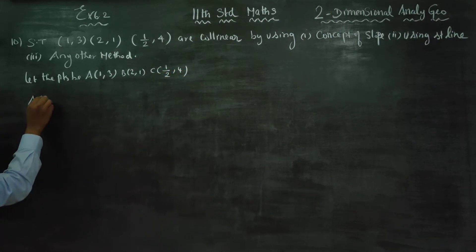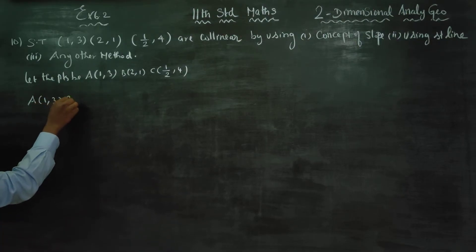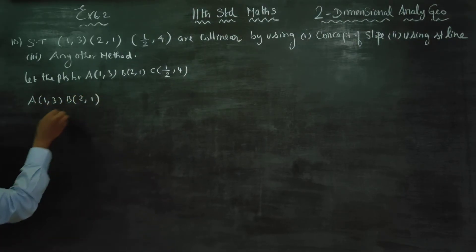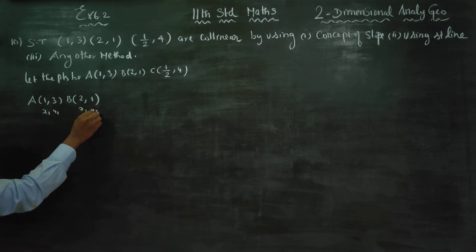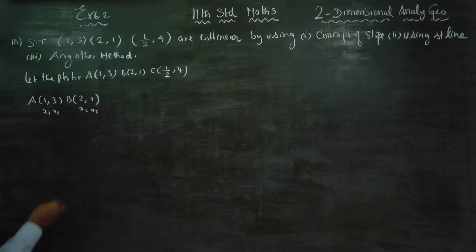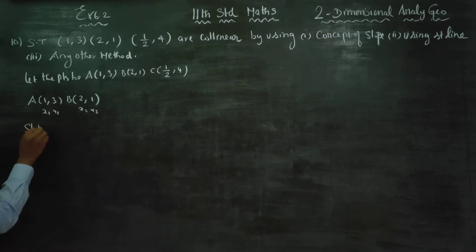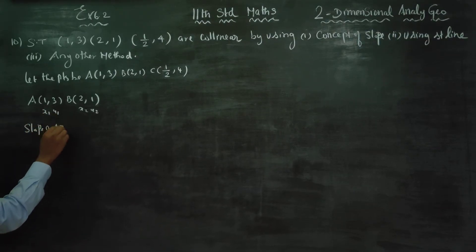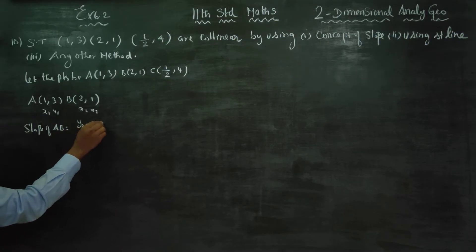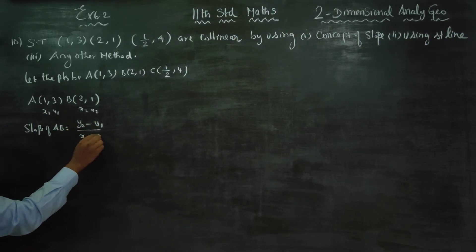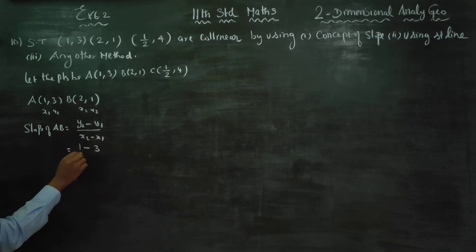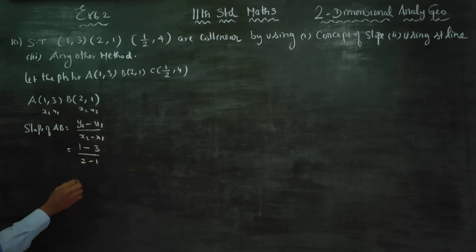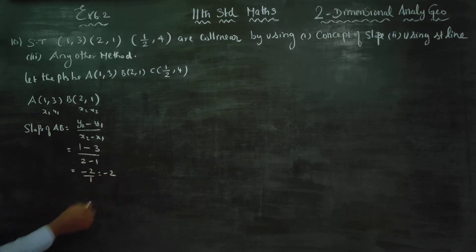First, for AB: A is (1,3) and B is (2,1). Name these as x1, y1, x2, y2. Using the concept of slope, I am going to find the slope of AB. The slope of AB formula is (y2 minus y1) by (x2 minus x1). So that is (1 minus 3) by (2 minus 1), which gives minus 2 by 1. The answer is minus 2.